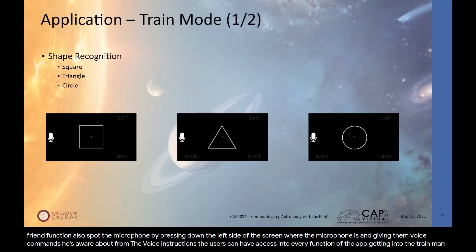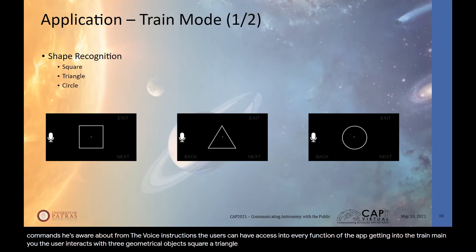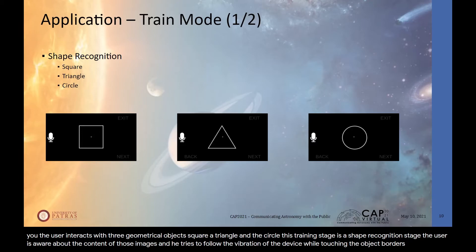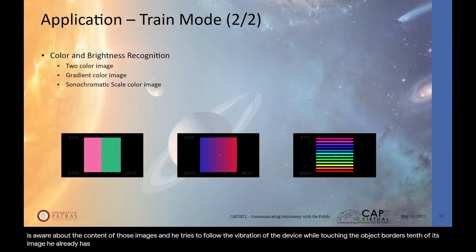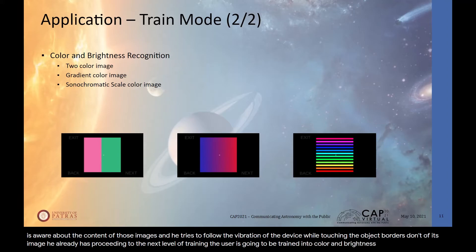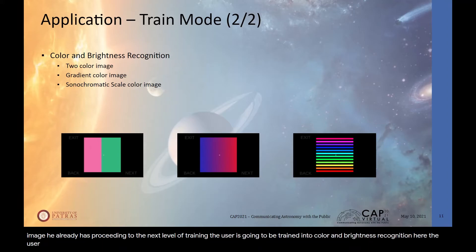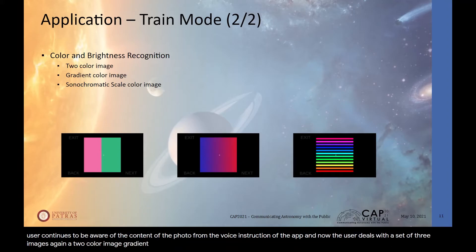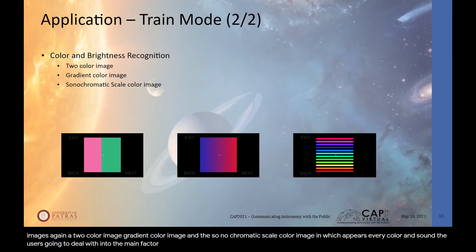In the train menu, the user interacts with three geometrical objects — a square, a triangle, and a circle — in the shape recognition stage. The user is aware of the content of those images and tries to follow the device's vibration while touching the object borders. Proceeding to the next level of training, the user is trained in color and brightness recognition using three images: a two-color image, a gradient color image, and a sonochromatic scale color image showing every color and sound they will encounter in the play function.